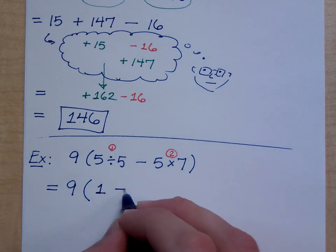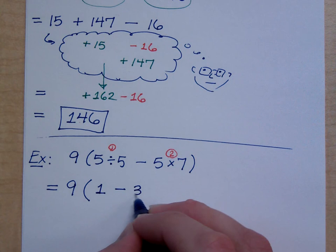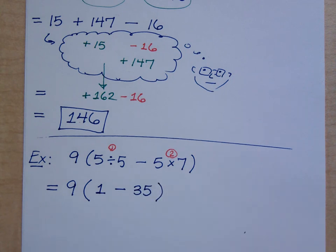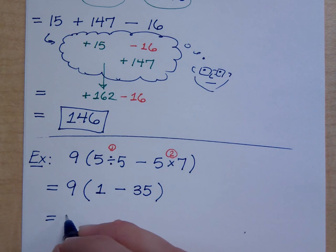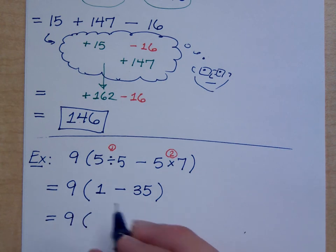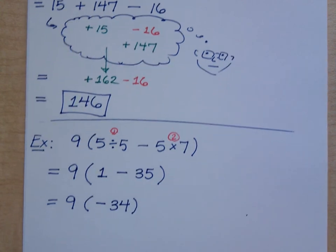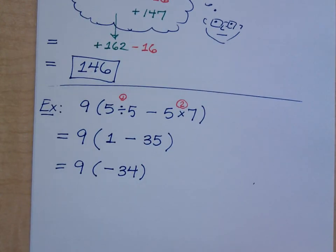So 9 times — inside the parentheses, that's 1 minus... Okay, now that I took care of that, I'm still working inside the parentheses. What's 1 minus 35? It's not 34, it's negative 34. Negative 34. And then to finish this, it's just a matter of multiplication.